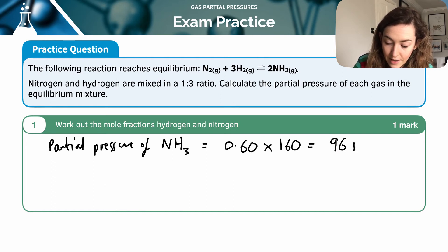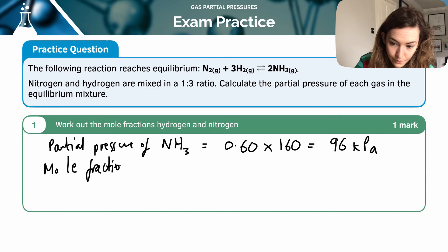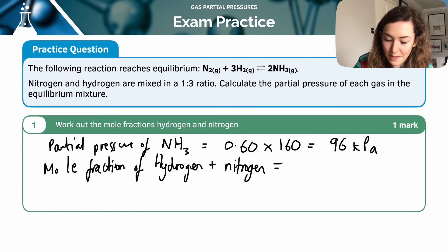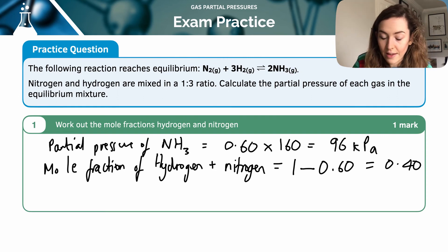And I can also work out my mole fraction of hydrogen plus nitrogen. That must be 1 minus my mole fraction of the ammonia, so 1 minus 0.60, so that is 0.40. So in the mixture, I've got 0.60 on the right-hand side and 0.40 on the left-hand side.